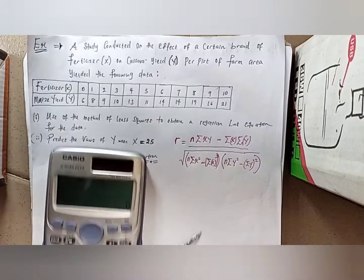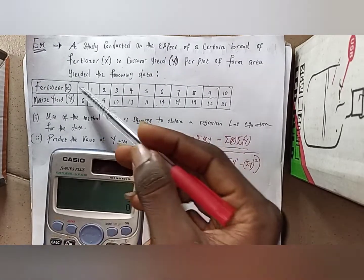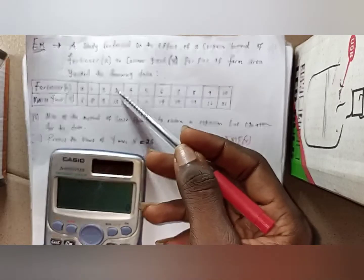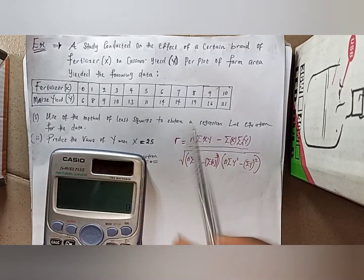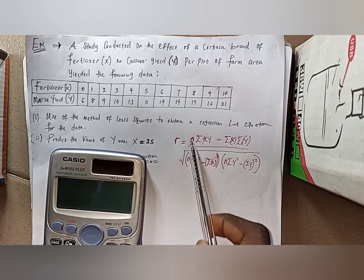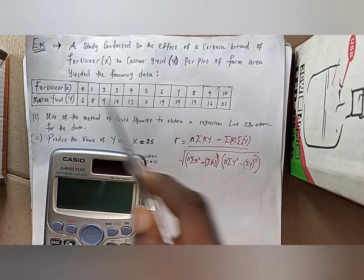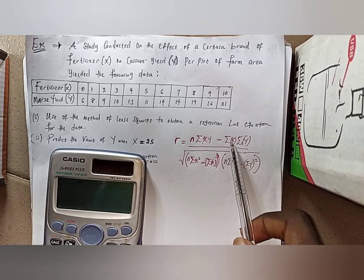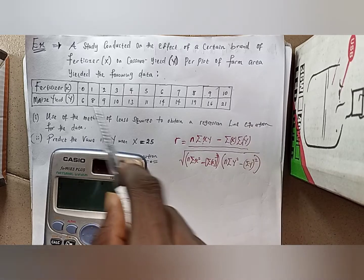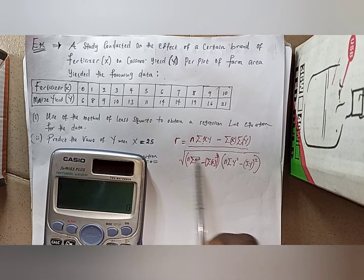For you to compute something like this, it's going to take your time. This simply implies multiply x and y together - 0 times 6 is 6, 1 times 8 is 8, 2 times 9, like that, then sum all the results. Then you multiply it by the number of items which is 11, the number of observations.